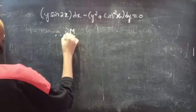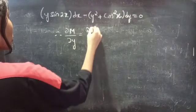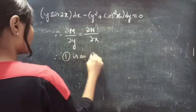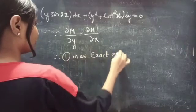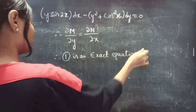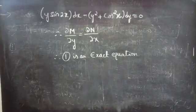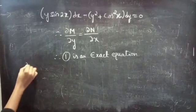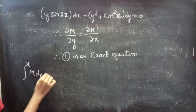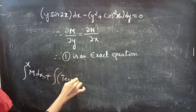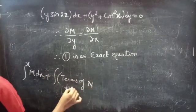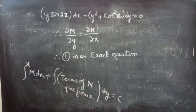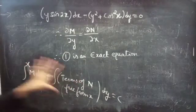Therefore, since ∂M/∂y equals ∂N/∂x, equation 1 is an exact equation. The general solution of equation 1 is given by: the integral of M dx (treating y as constant) plus the integral of the terms of N free from x, with respect to dy, equals constant c.